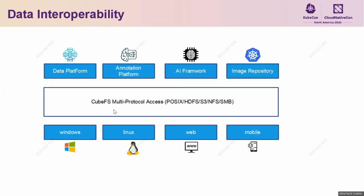Now let's look at data interoperability. Throughout the entire workflow of large-scale models, data flows through different stages from processing to model packaging and distribution. How can data efficiently flow between different platforms? A key capability in storage is supporting multiple protocol access, allowing data sharing among different access methods while storing only a single copy of data.